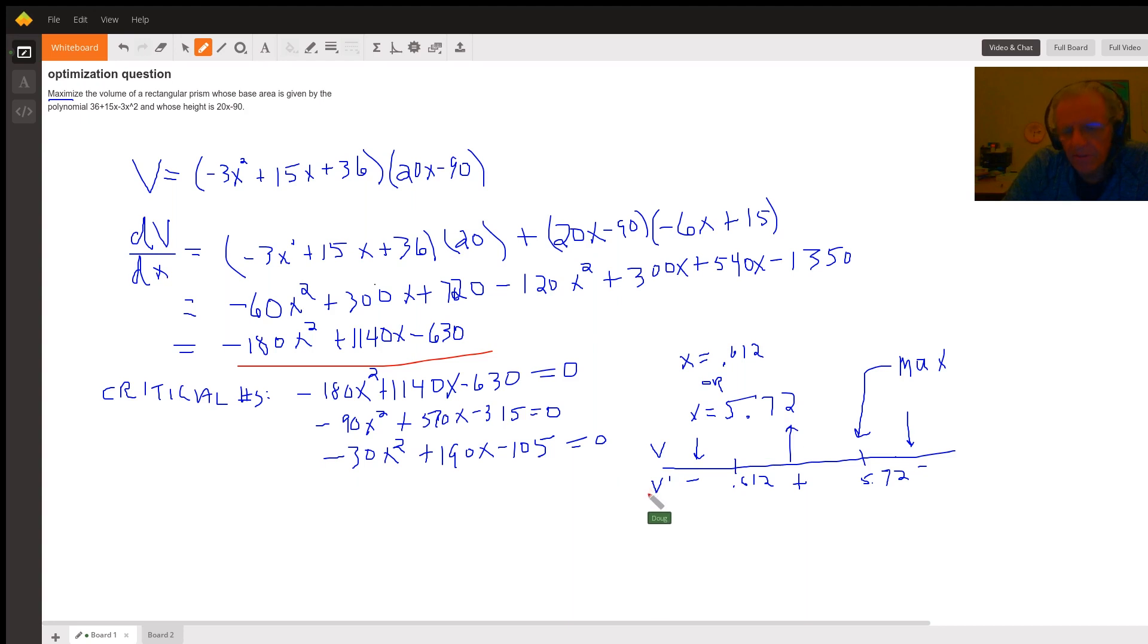Then I put the little number line here, putting on these two critical numbers where the derivative has a value of zero. To the left of 0.612, like if I put the number zero into the first derivative, which is to the left of 0.612, I get a negative value, which means the original function is decreasing.